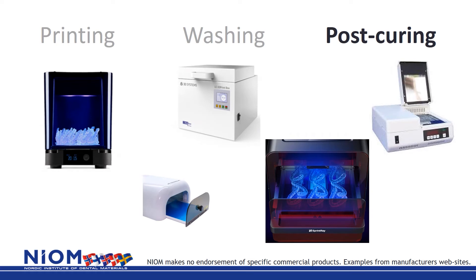The final step in the 3D printing process is post-curing. This process may take from 10 minutes up to one hour. The object is placed in a light chamber, usually giving a narrow spectrum of light around the polymerizing wavelengths. Post-curing can be done with or without inert gas in the chamber, depending on the manufacturer's instructions. The light chambers may also have possibilities for temperature adjustment when additional heating is required.